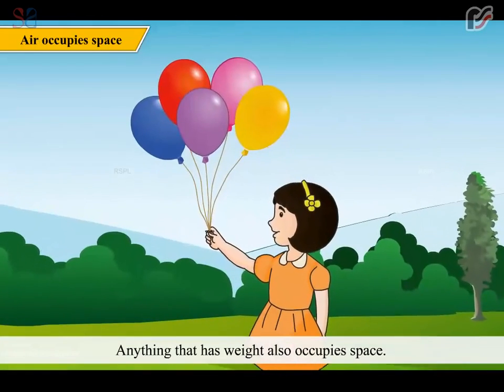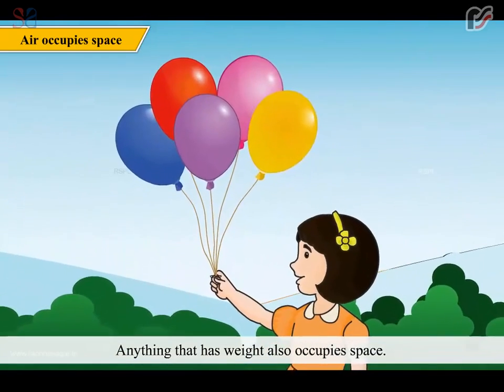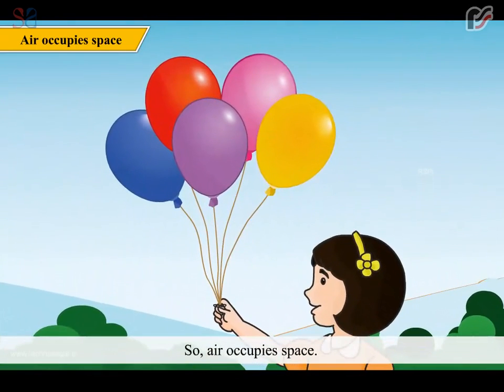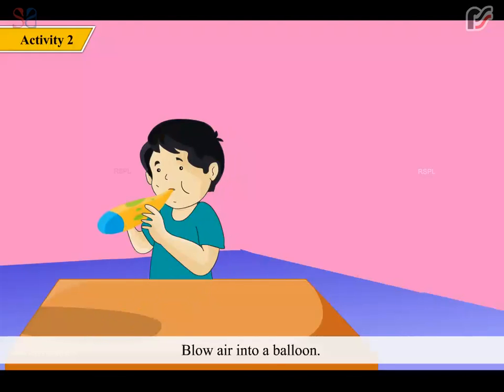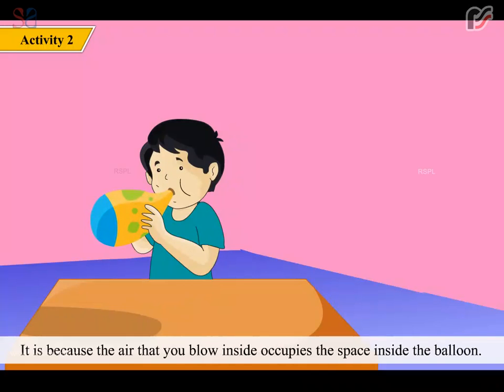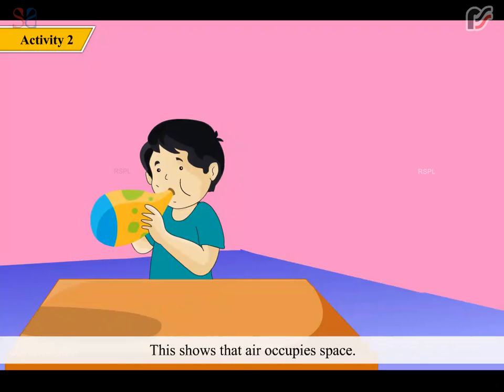Anything that has weight also occupies space. So, air occupies space. Let us check how. Blow air into a balloon. What do you see? The balloon turns bigger and bigger. Why? It is because the air that you blow inside occupies the space inside the balloon. This shows that air occupies space.